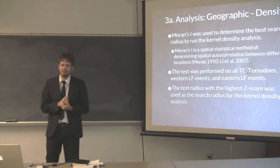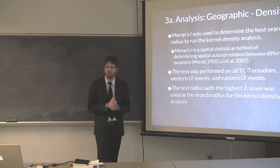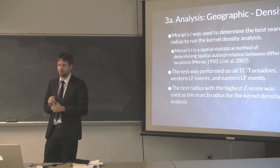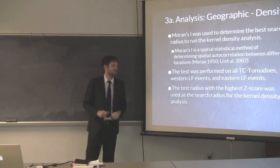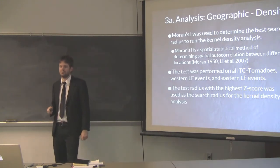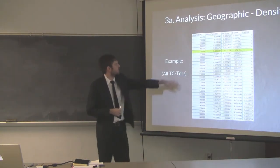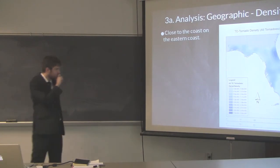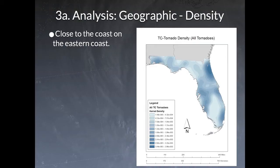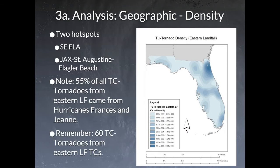For the geographic analysis, we needed to determine the appropriate search radius for a kernel density analysis. We used Moran's I — a spatial statistical method for determining spatial autocorrelation between points — to test TC tornadoes for western and eastern landfalling events. The test radius with the highest Z-score was used as the search radius for the kernel density analysis. For all TC tornadoes, the optimal search radius came out to 70 kilometers. The resulting density map shows high concentrations east of Pensacola in the Panhandle, west-central Florida, southeast Florida, and northeast Florida.